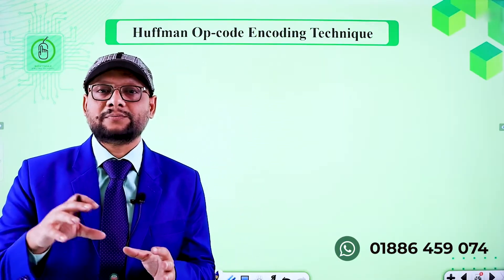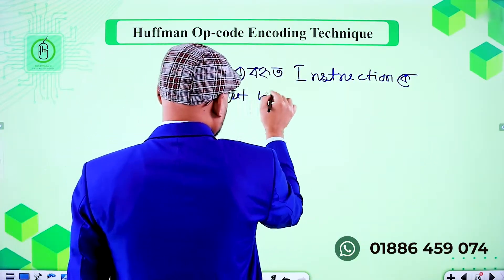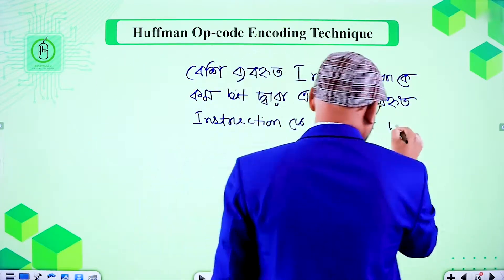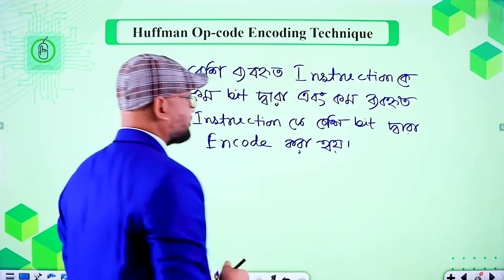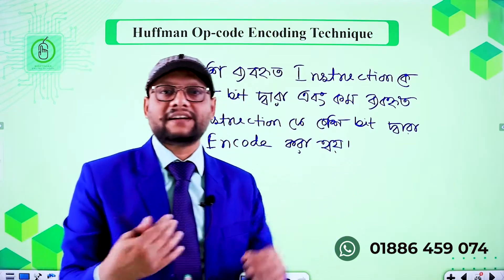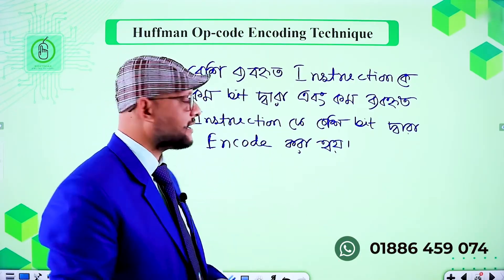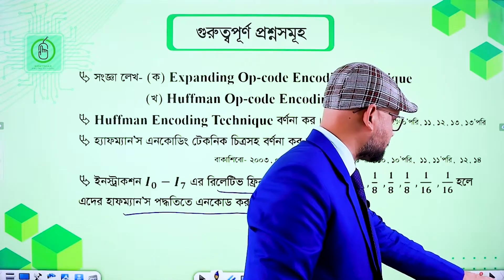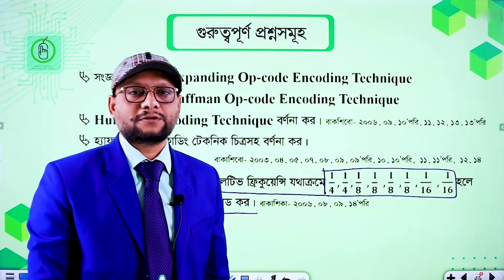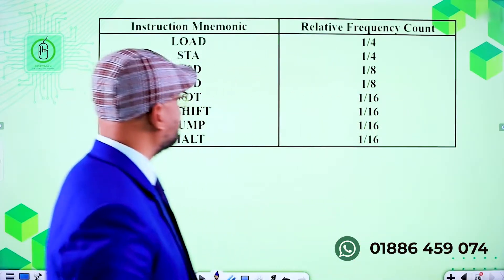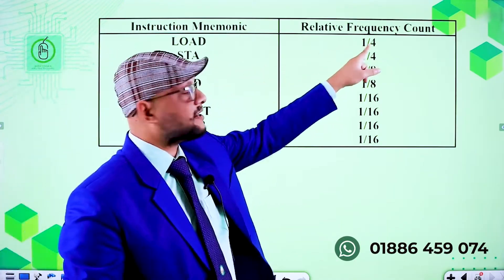The instruction set is used in the Huffman encoding technique. Instructions range from 20 to 60 bits, with some instructions having less than a bit. This is the frequency — how many times an instruction appears. This is called the relative frequency count. That means the load instruction appears 4 times and 1 time.